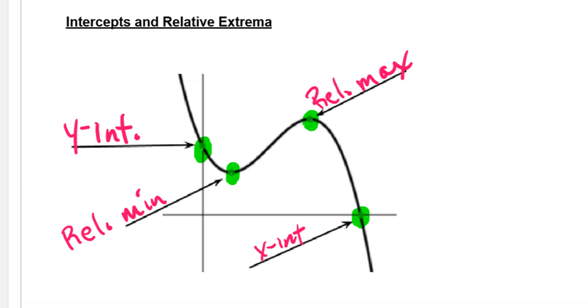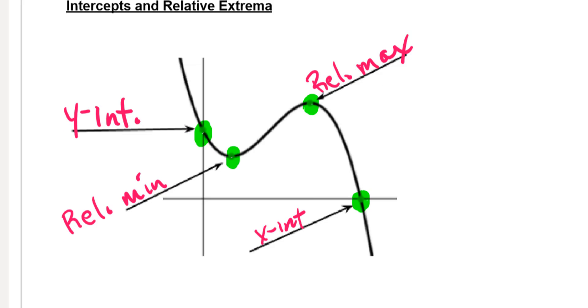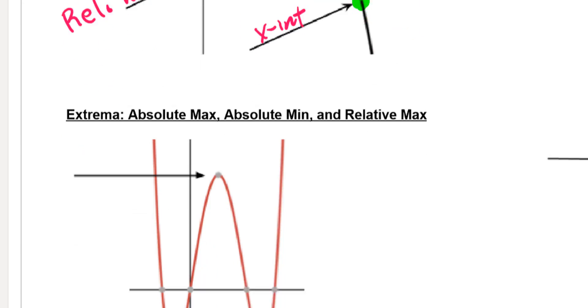Anytime you have a change in your slopes, that's where you're going to have these maximums and minimums. So Desmos tells us maximums, minimums, as well as intercepts — that's pretty cool.